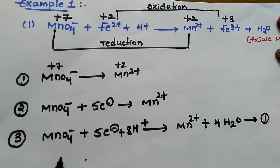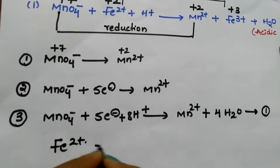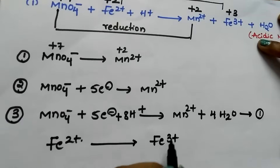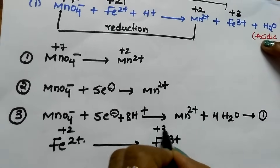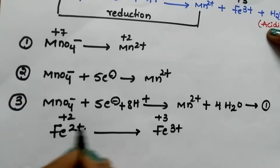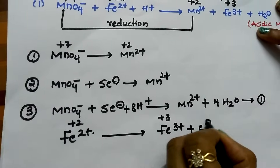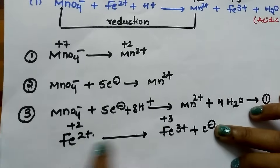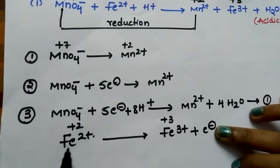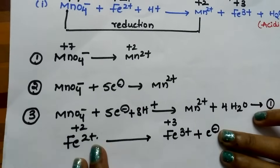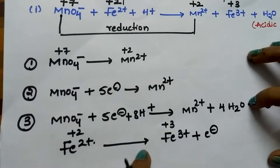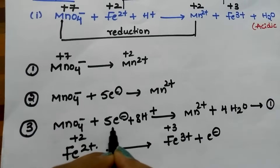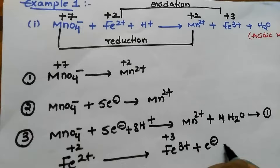Now see the oxidation reaction. Fe²⁺ is changed into Fe³⁺. Here +2 is changed into +3 — this is called oxidation because of the increase in oxidation number. Oxidation means loss of electrons, so I am writing 1 electron here because the change in oxidation number is 1. Only the ion is there, so balance the atoms: here 1, here 1. The number of atoms and electrons are balanced. This is equation 2.